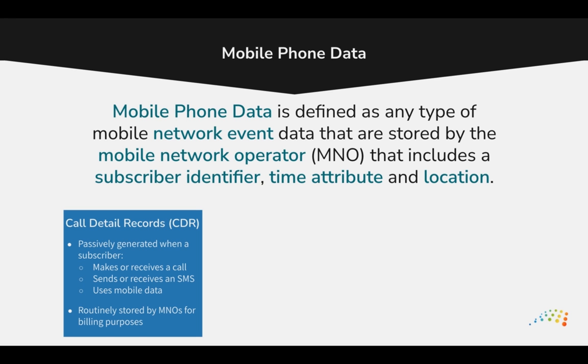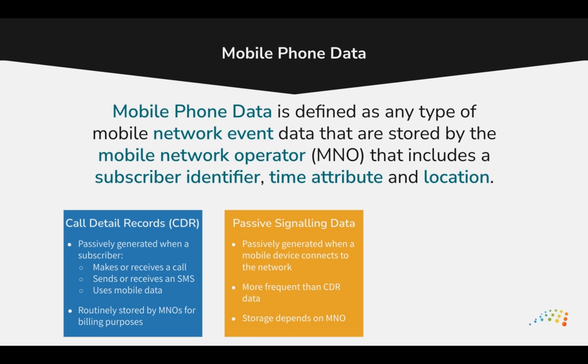Signalling data refers to all other signals in a mobile network which are not directly billable to subscribers. Such data are passively generated by mobile devices connected to a network more frequently than CDR data, resulting in higher quality datasets. However, the quantity of data produced by passive signalling requires greater investment in data infrastructure, and passive signalling data is not routinely stored for longer than weeks or months.